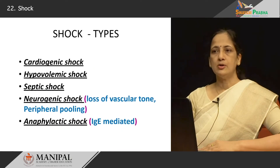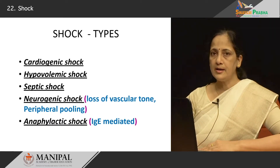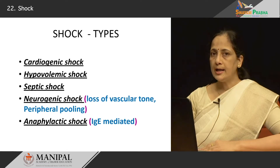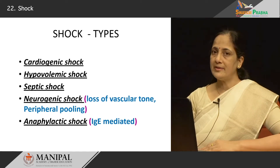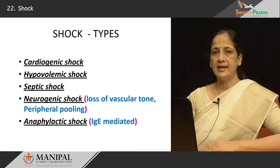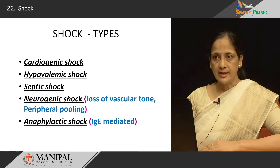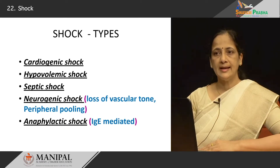So let us go back and look at the different kinds of shock. There are basically five main types: cardiogenic shock, which occurs when there are different cardiac diseases; hypovolemic shock when there is a loss of blood volume; septic shock when there is bacteremia; neurogenic shock when there is loss of vascular tone and peripheral pooling of blood; and anaphylactic shock as occurs in hypersensitivity and is IgE mediated. We will focus on the pathogenic mechanism involved in the first three types: cardiogenic shock, hypovolemic shock, and septic shock.